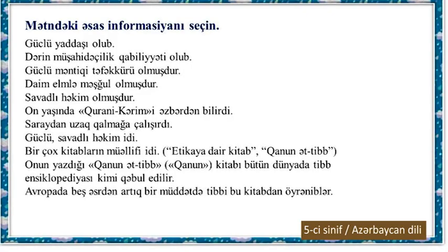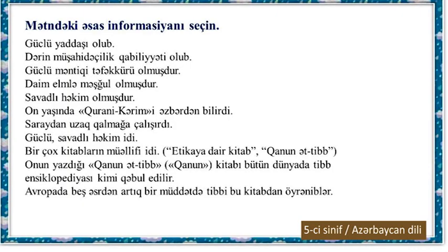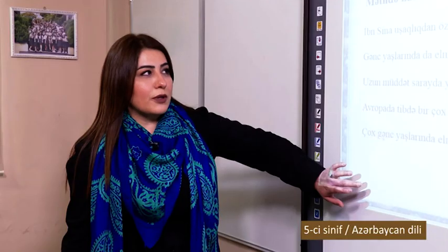He was a very strong and learned doctor, and because of this all rulers tried to keep him at court. But Ibn Sina tried to stay away from the royal court as much as possible. He was the author of many books, two of which you will get acquainted with in the text. The book on ethics and the Canon of Medicine. His book called the Canon later spread throughout the world, and after the first printing press appeared, the second book to be published was the Canon. The first book printed was the Bible. This book called the Canon is presented worldwide as an encyclopedia of medicine, and in Europe for over five centuries, medicine was learned from this book.